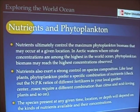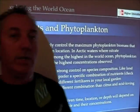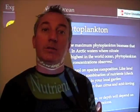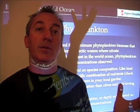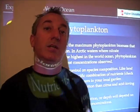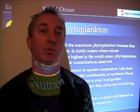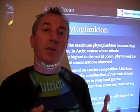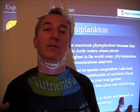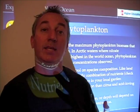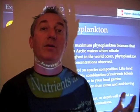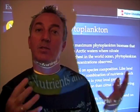Nutrients also play a role in the kinds of species that we find. If there is a lack of iron, we generally don't find diatoms. If silica runs out, diatoms won't grow anymore. So the types of nutrients, as well as their abundance, is going to determine the amount of phytoplankton as well as the species.